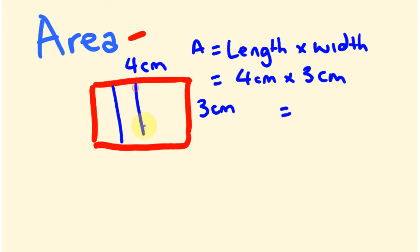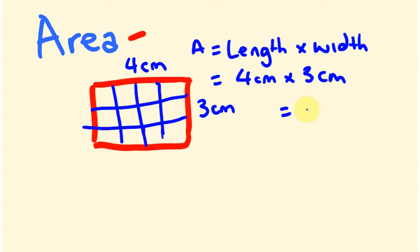Marking out 4 divisions one way and 3 the other, we end up with 12 centimeters squared. That's the way we work out the area of a rectangle.